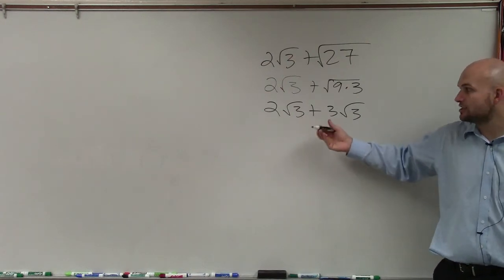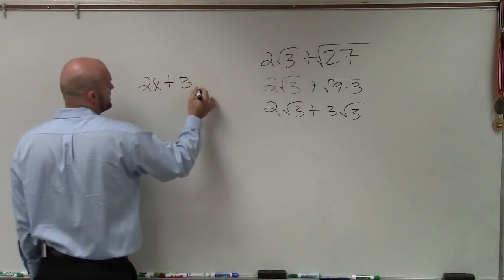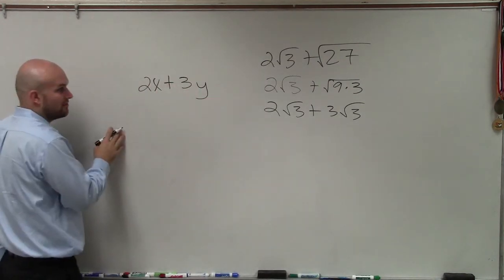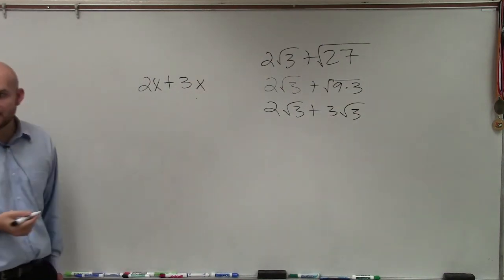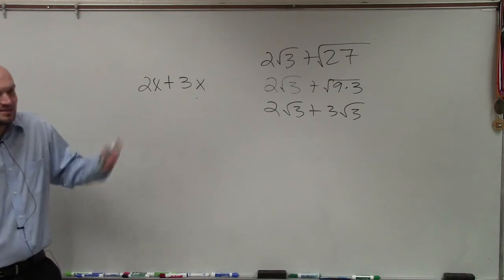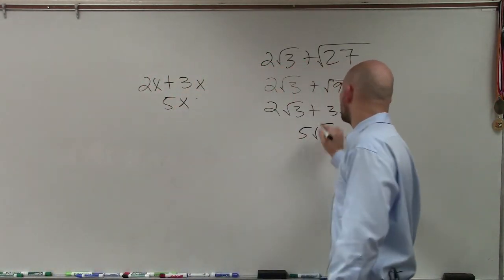It's just like combining like terms. It's like doing 2x + 3y. You can't add 2x + 3y, but if it's 2x + 3x, you can do that. That would be 5x, and this is 5√3.